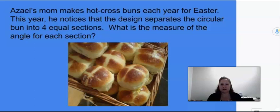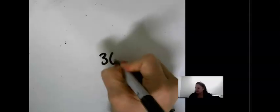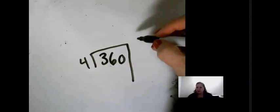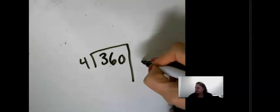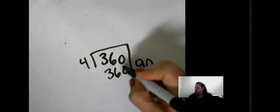We know a circle is how many degrees? Right, 360 degrees and one-fourth of a circle is 90 degrees. Very good. 360 divided by four is 90. So each section of the bun is 90 degrees. I know that four times nine is 36 and four times 90 is 360 degrees.